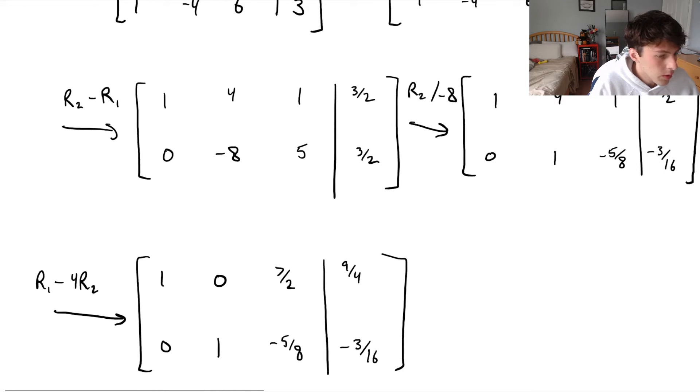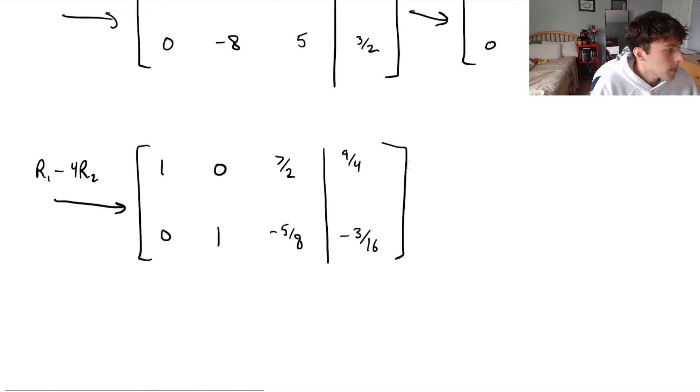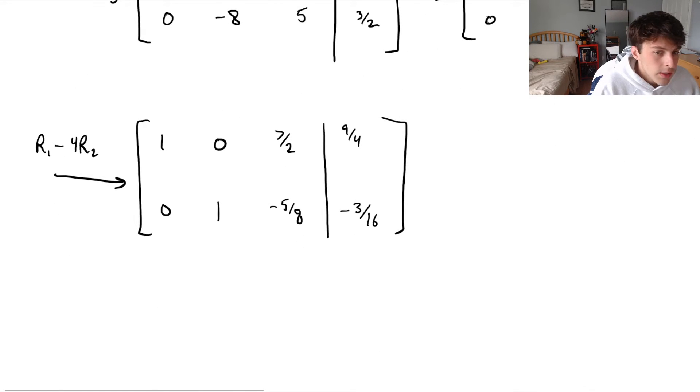And now we're finally in reduced row echelon form, okay? And you can see now this is a lot easier to write out our system of equations, or the solutions to our equation. And this totally checks out. We've got one free variable in this column. You can see there's no leading entry. So we've got a free variable here. Totally checks out. We should have one, because we had three unknowns and we had two equations. So we need to have one free variable. It's impossible to have a unique solution here.